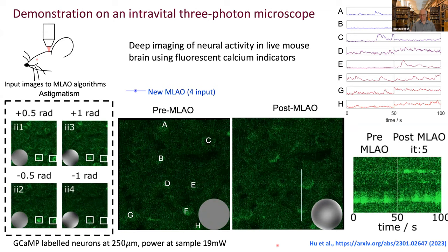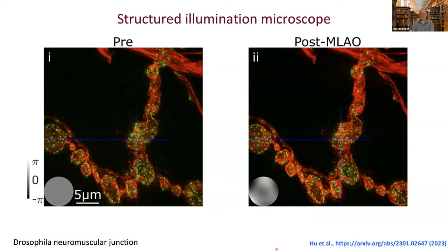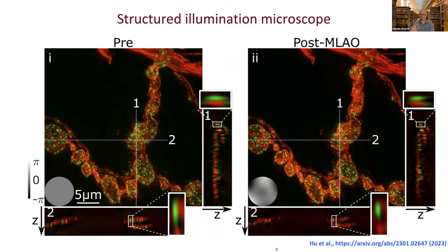We have also applied machine learning-enabled adaptive optics control to super-resolution microscopes — in this case a structured illumination microscope (SIM). SIM uses a sequence of 15 images with structured sinusoidal illumination patterns at different orientations, from which a super-resolution image is extracted. The image before aberration correction suffers severely from aberration artifacts, but after correction all imaging artifacts disappear and much clearer images result. A further example is a dual-color image of a neuromuscular junction in a fruit fly embryo, where zooming in after aberration correction shows improved detail and improved Z-axis resolution in three-dimensional imaging.